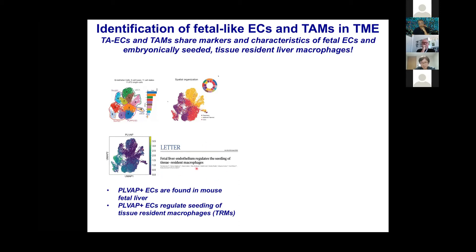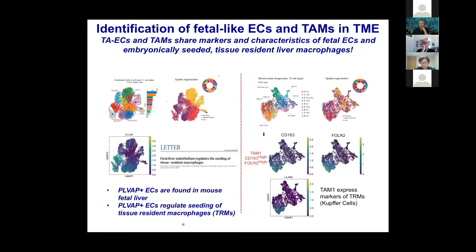Interestingly, a 2016 paper showed that PLVAP is highly expressed in mouse fetal liver and regulates the seeding of tissue-resident macrophages. This led us to carefully examine the myeloid cells. Again, sub-clustering the myeloids reveals clusters on the left mainly from the tumor — these are tumor-associated macrophages — and on the right mainly from the normal, which has monocytes and dendritic cells.